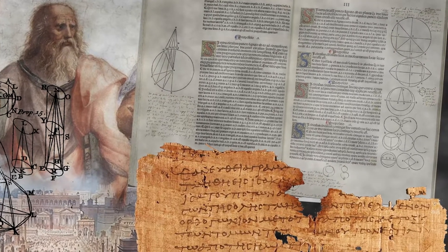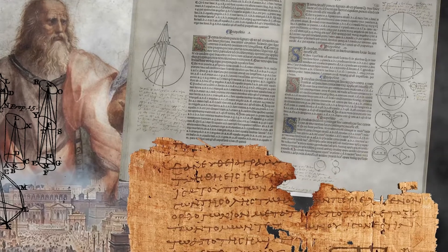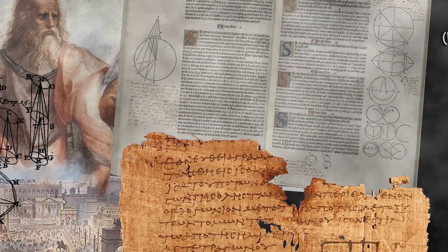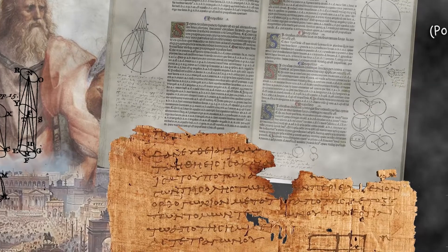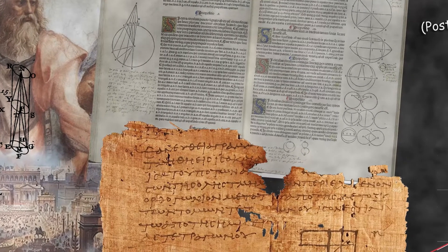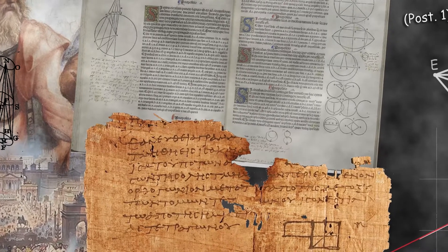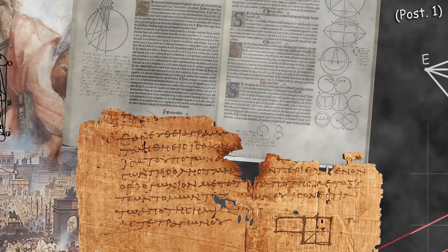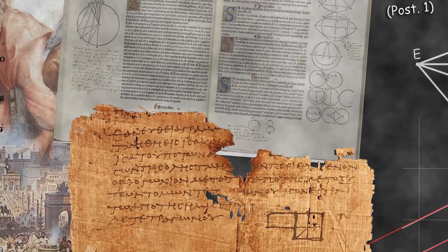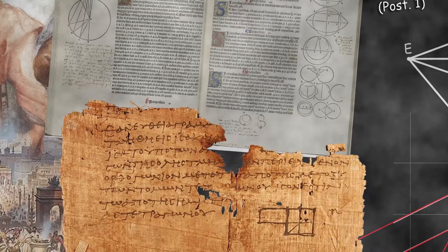So little is known about the life of the man that it has been suggested that the name Euclid is actually the name that a group of Alexandrian mathematicians gave to themselves when publishing Elements. Still, whether it was written by one man or many, there is no doubt that Elements is one of the most important books ever written.